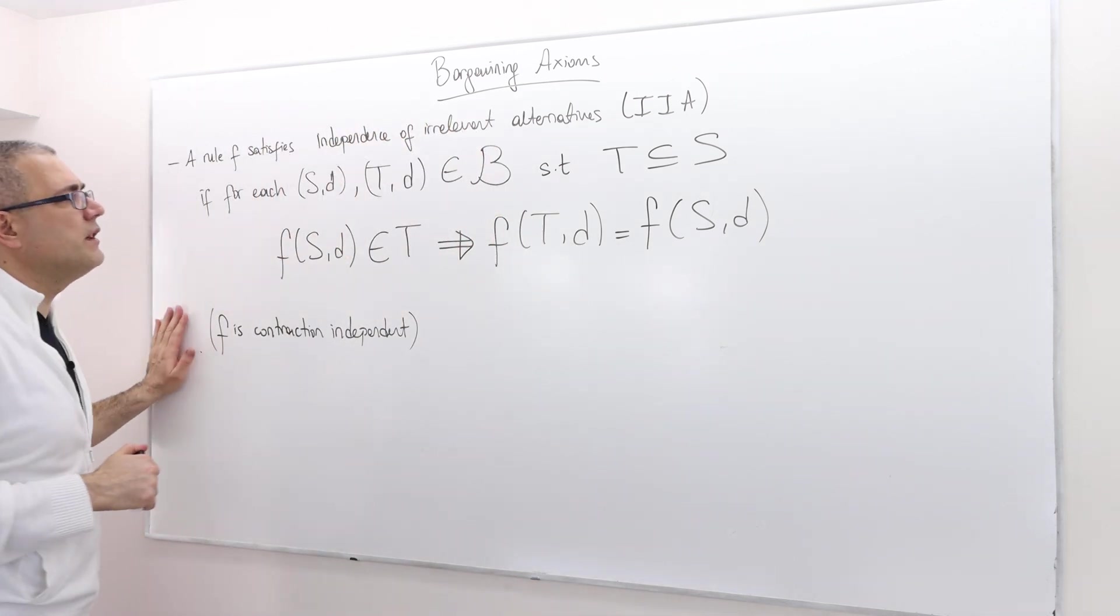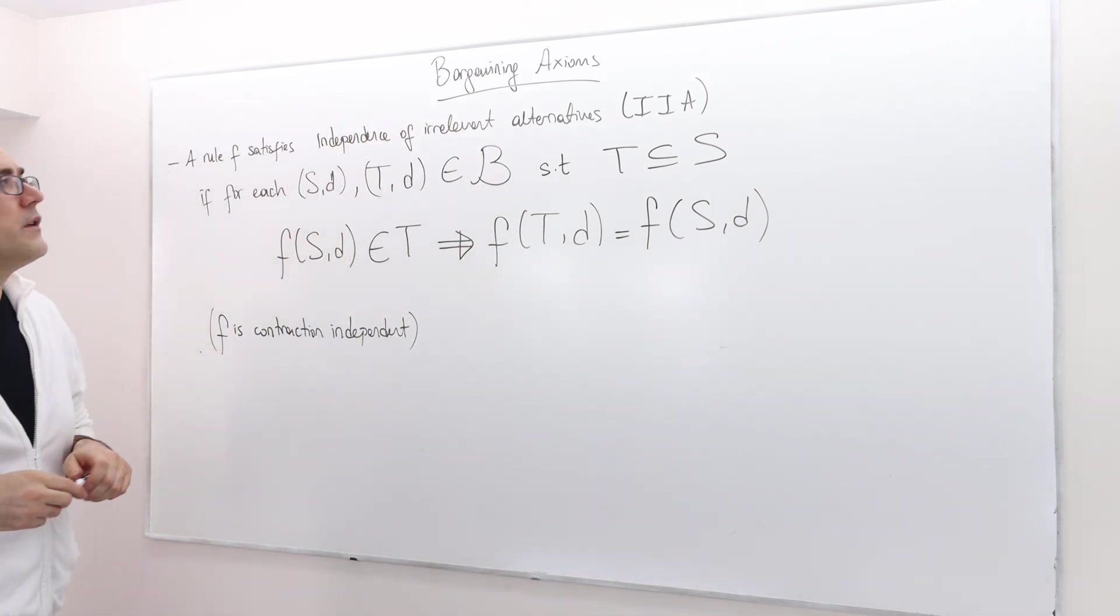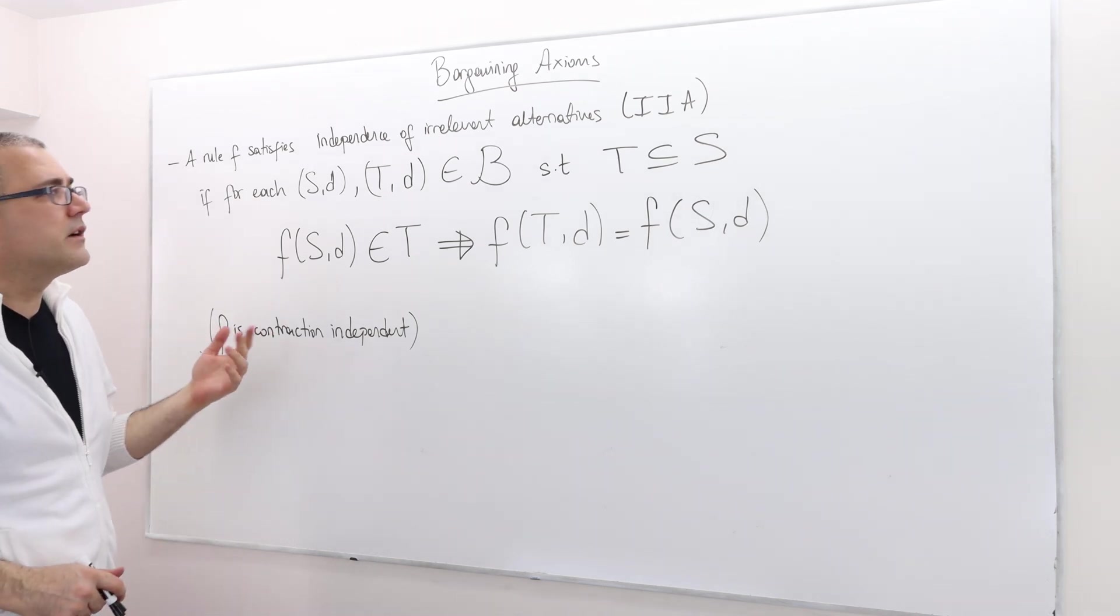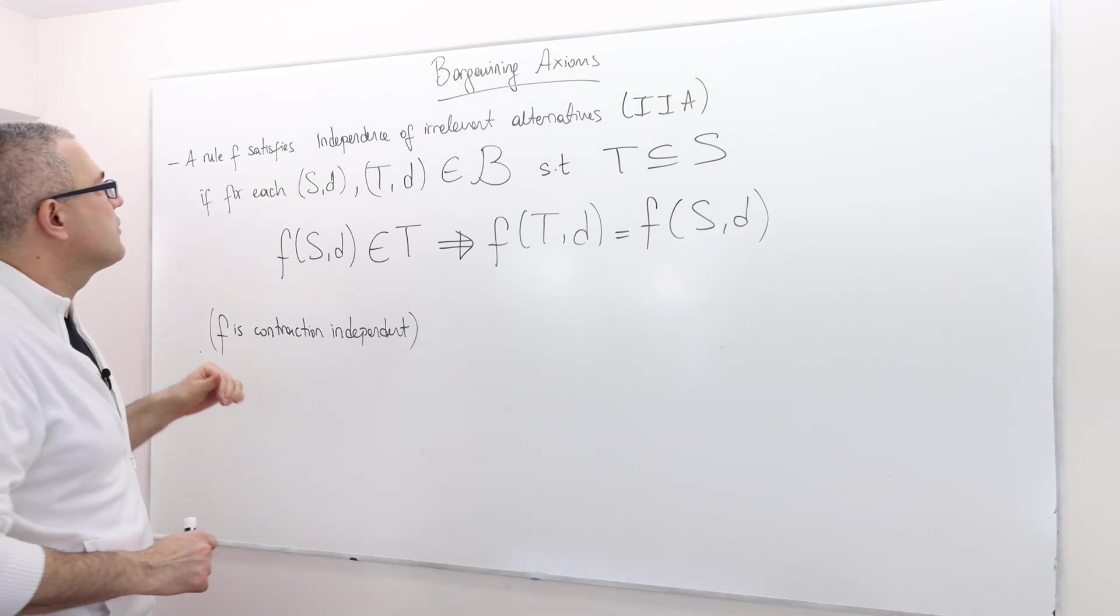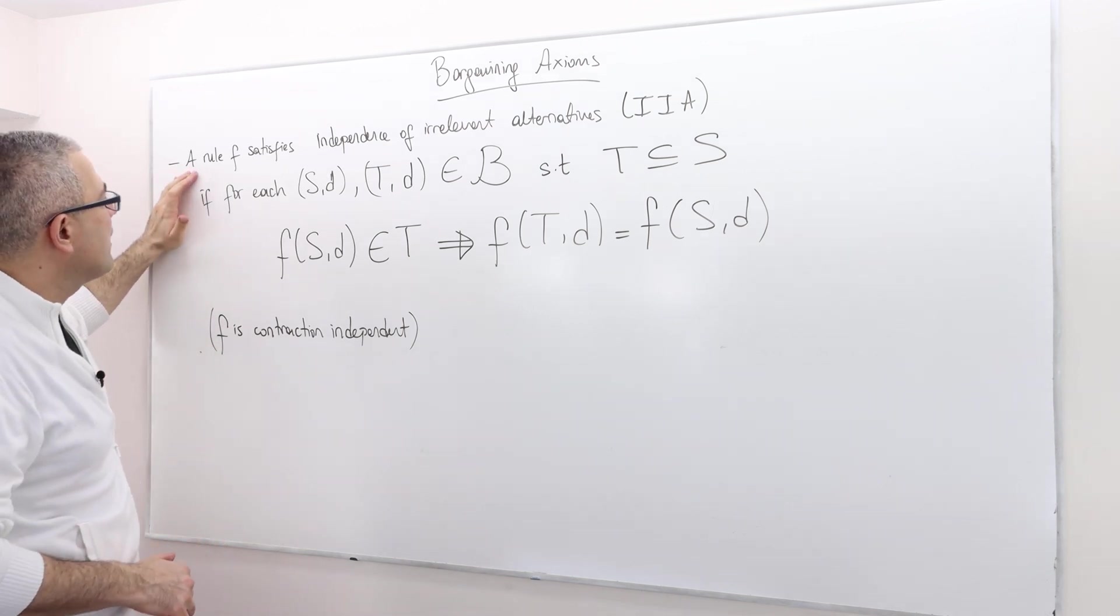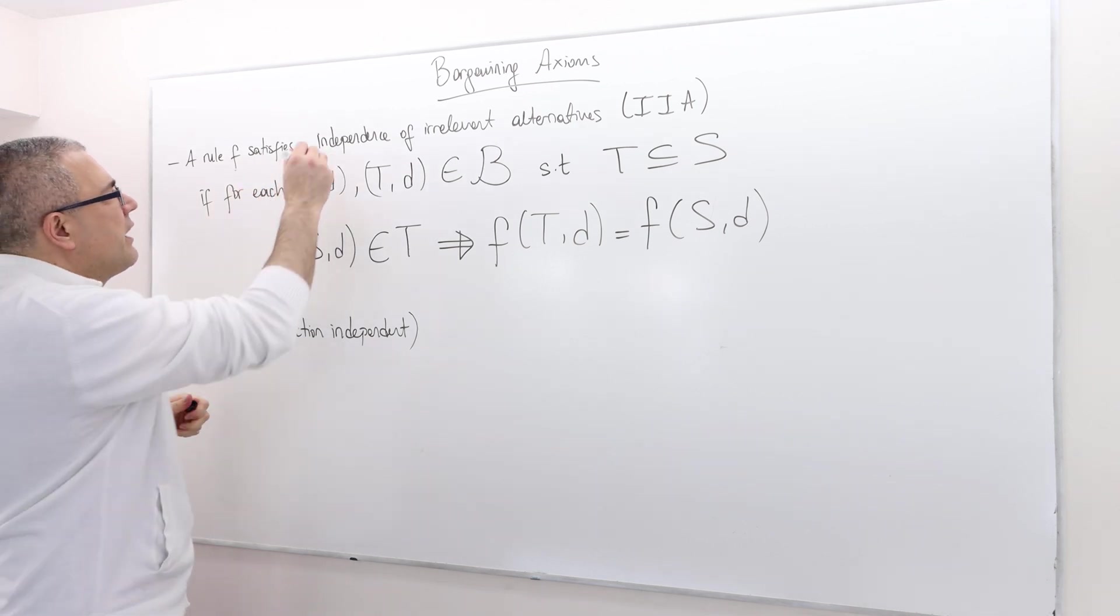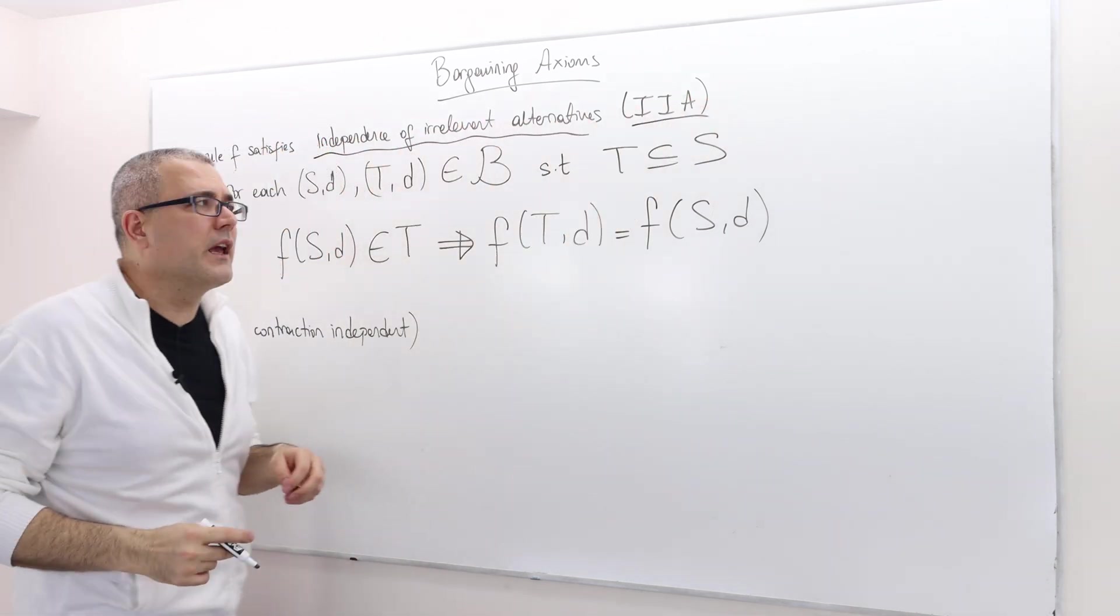So here is how we define this very important axiom. And in fact, this axiom, we're going to keep using it a lot later in probably social choice theory as well. So a bargaining rule F satisfies independence of irrelevant alternatives, sometimes called IIA.